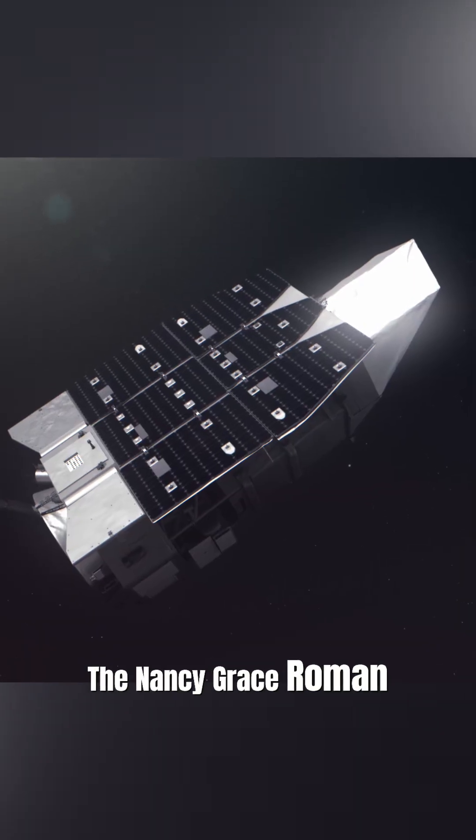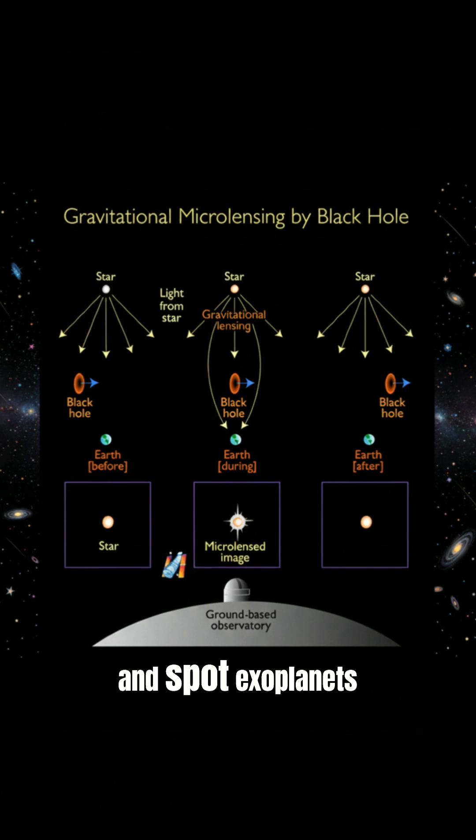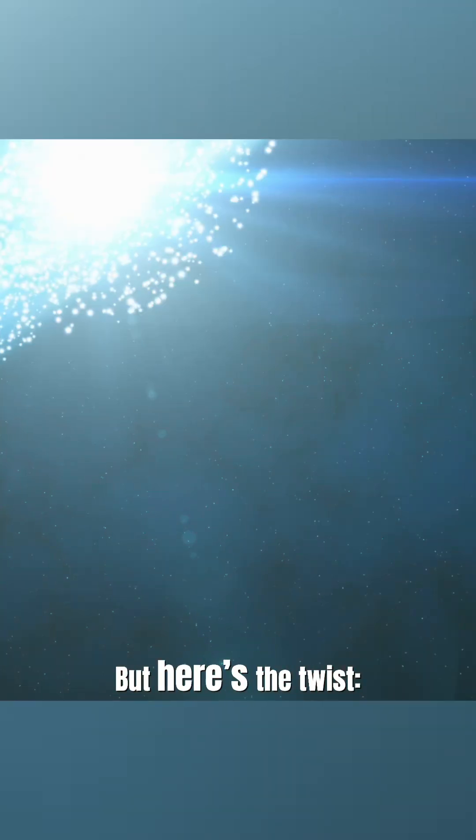The Nancy Grace Roman Space Telescope is NASA's next big leap, designed to hunt for dark energy and spot exoplanets using a technique called microlensing. But here's the twist.